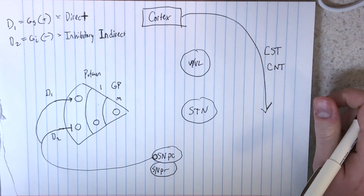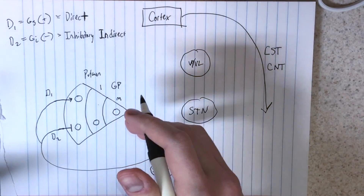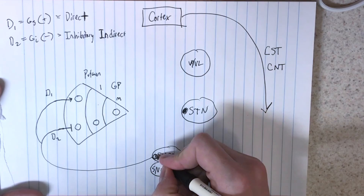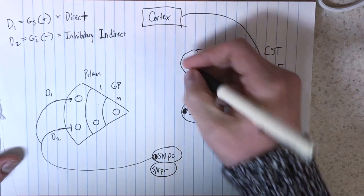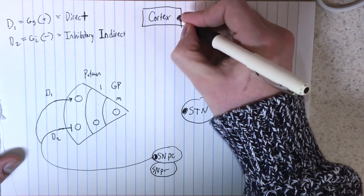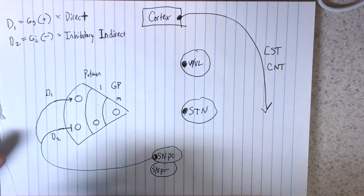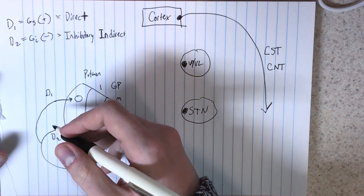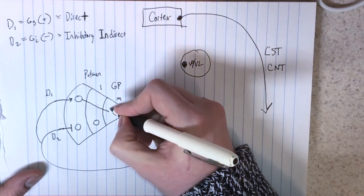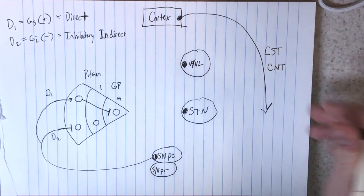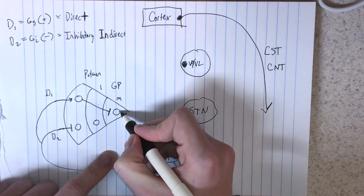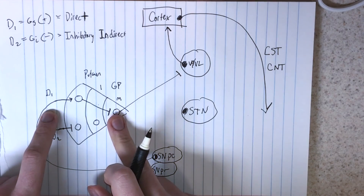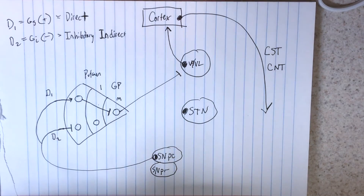Everything in the striatum is inhibitory; everything else is excitatory. The direct pathway makes sense why it's called direct: from the substantia nigra pars compacta to the putamen via the D1 G-alpha-s excitatory receptor, then an inhibitory signal to the globus pallidus medialis (interna), then directly inhibitory to the VA/VL thalamus, and then excitatory from the thalamus to the cortex.